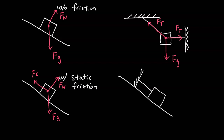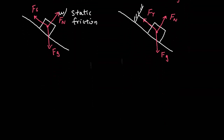Here we have a box connected to a string and it's also on an incline. As usual I start with Fg, then the surface exerts a normal force 90 degrees to the surface, and since we also have a rope we include a tension force along the direction of the rope.